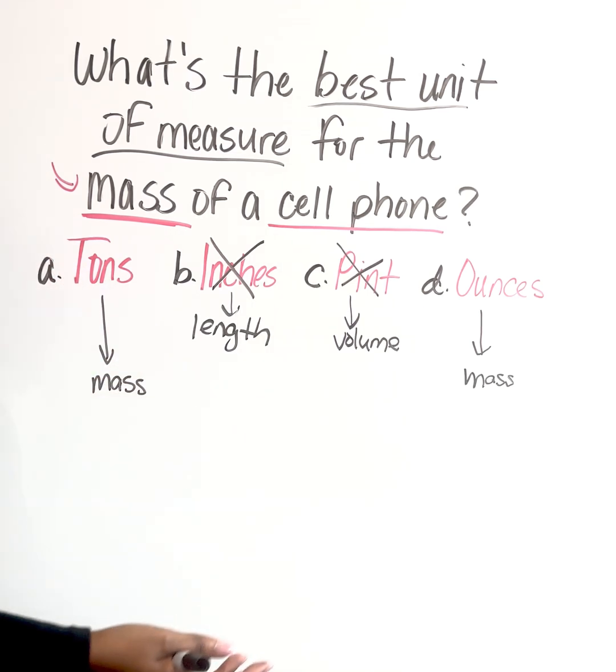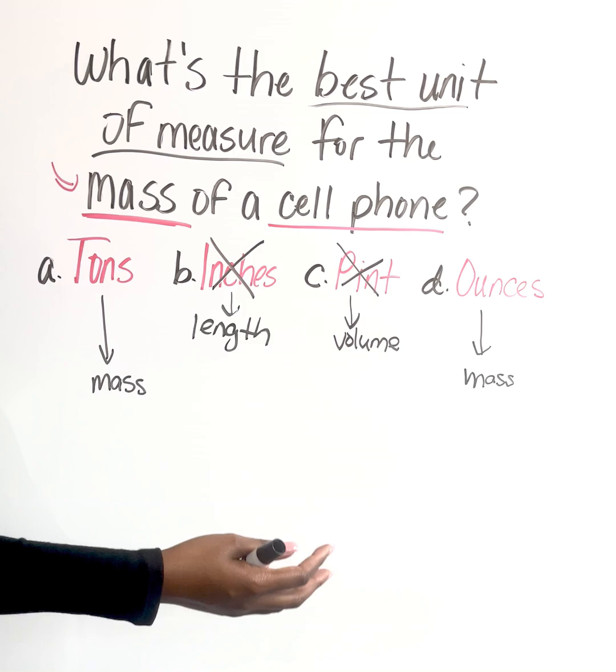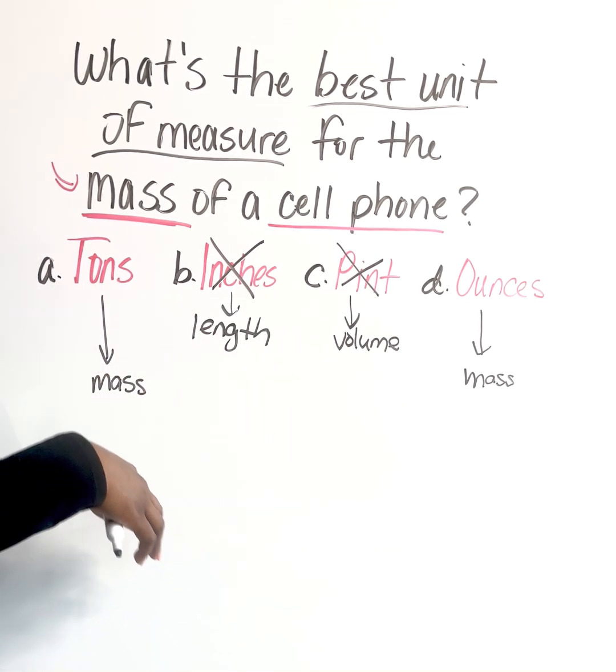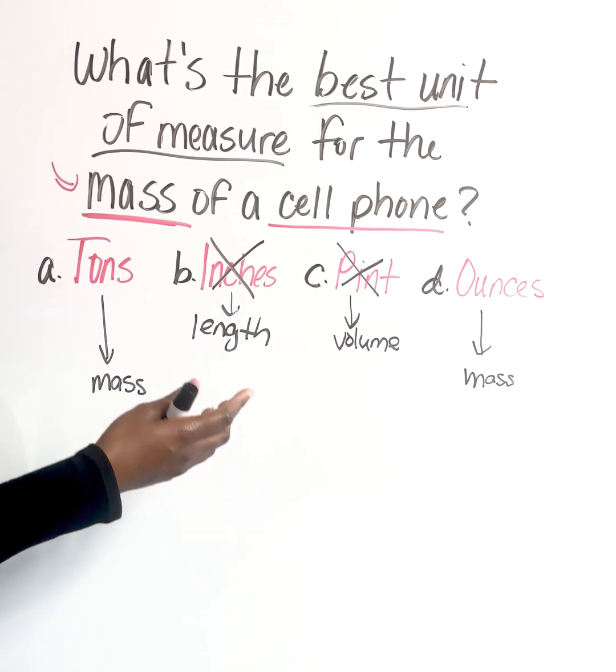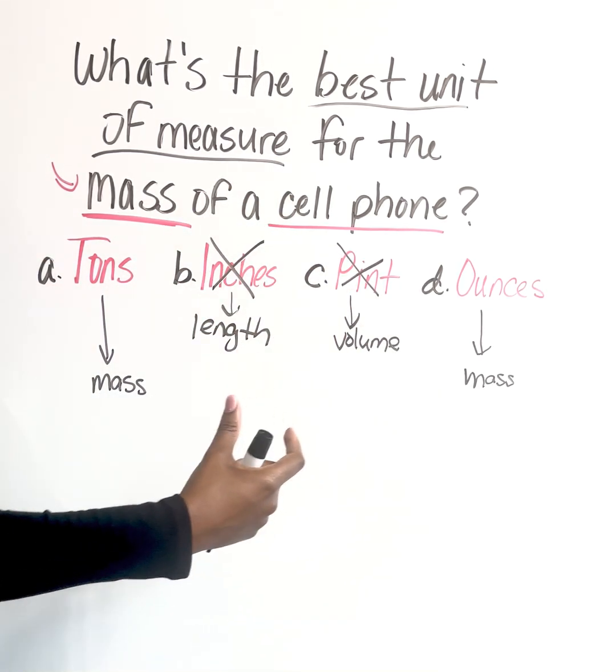Like if I think of pieces of fruit or even when we do measurements in the kitchen, things are measured in ounces or things are measured in cups. So when we think of this scenario for a cell phone, and we think of the size of a cell phone,